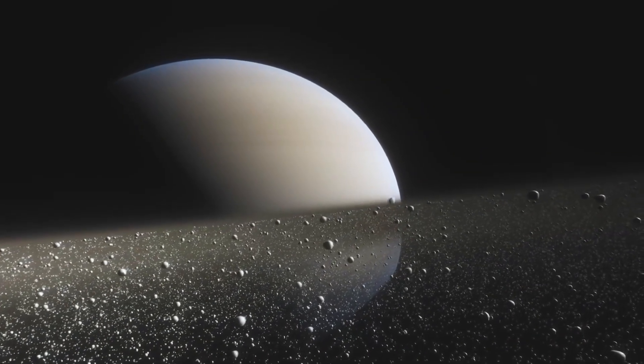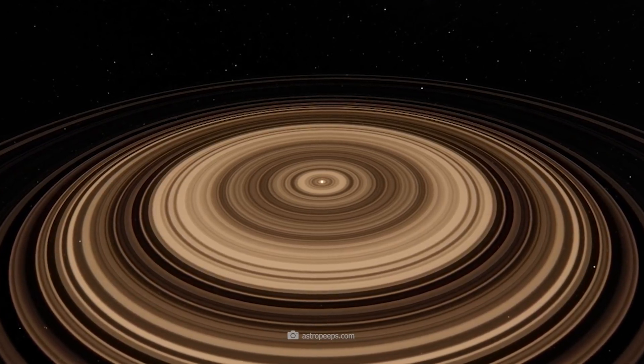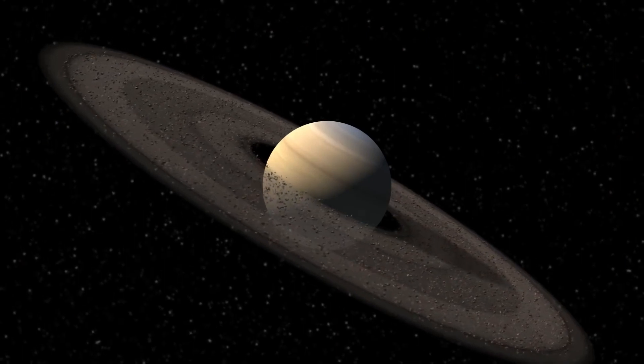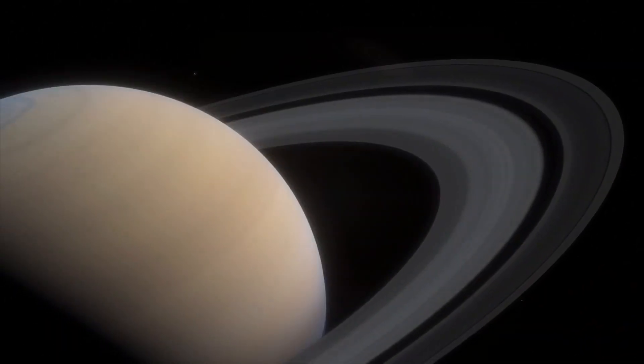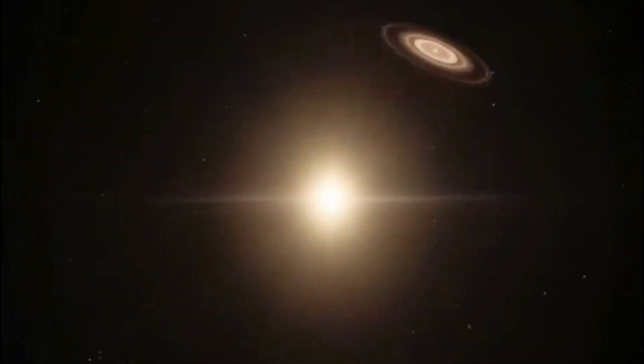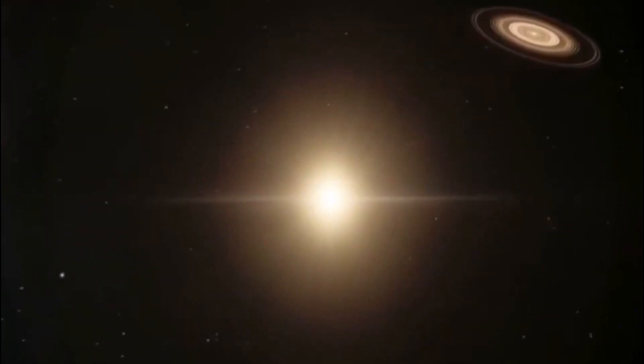Finally, we should discuss the potential habitability of Super Saturn. Unfortunately, due to its distance from Earth and the lack of current technology, we are unable to determine the habitability of this exoplanet. However, it is important to note that J1407b's orbit is much farther from its star than Jupiter's orbit is from the Sun, which suggests that it may be too cold to support life as we know it.